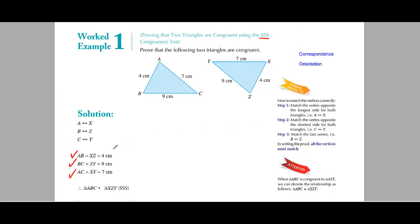Now we have proved that all three sides of one triangle are equal to the corresponding three sides of the second triangle. So we have applied the SSS test, and according to SSS, these two triangles are congruent.